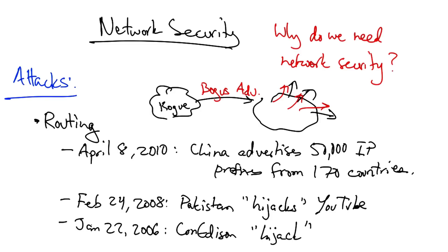In January of 2006, Con Edison accidentally hijacked a lot of transit networks, including Level 3, UUNet, and several other large ISPs, disrupting connectivity to many customers. And on April 25th, 1995, one of the more famous route hijack incidents was the AS7007 incident, where AS7007 advertised all of the IP prefixes on the entire internet as originating in its own AS, resulting in disruption of connectivity to huge fractions of the internet.